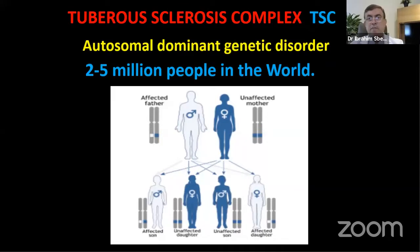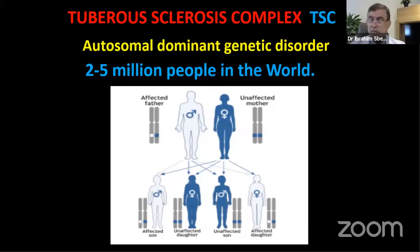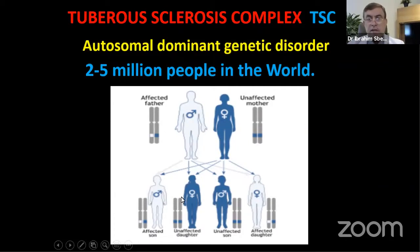Tuberous sclerosis complex is the terminology used worldwide to describe this autosomal dominant genetic disorder. It is a genetic disease affecting approximately two to five million people around the world. The father or mother can have affected boys or affected girls.